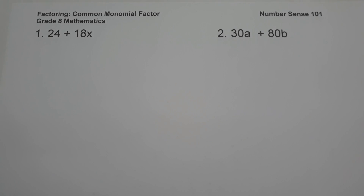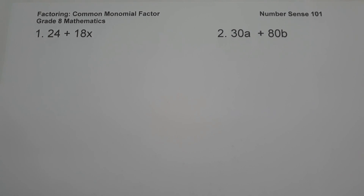In today's video we are going to talk about the first type of factoring, which is common monomial factor. To understand this, let us have some examples. On the first example we have 24 plus 18x.